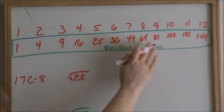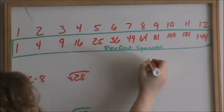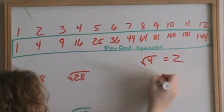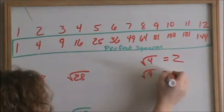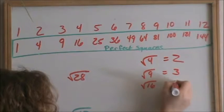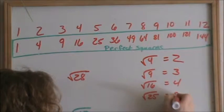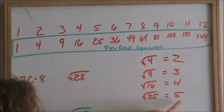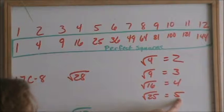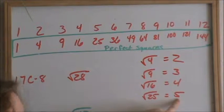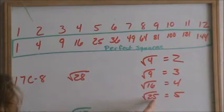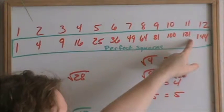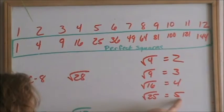These numbers in this box are called perfect squares. They are called perfect squares because when you take the square root of them — square root of 4 is 2, square root of 9 is 3, square root of 16 is 4, square root of 25 is 5 — they give you a whole number. Anytime a square root gives you a whole number, not a decimal number, it's called a perfect square.